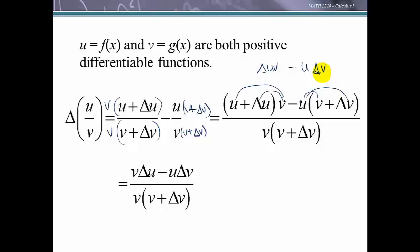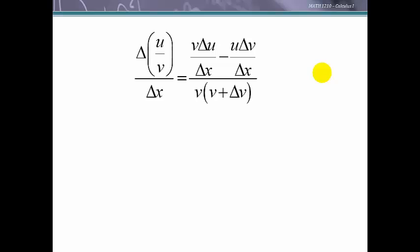We could take this little change in the quotient and we could divide both sides by delta x. So here we have divided by delta x or think of multiply it by 1 over delta x.